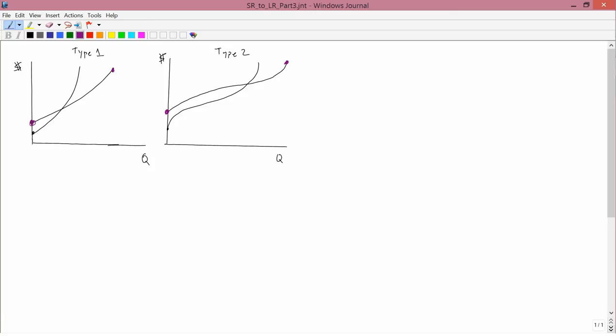We've seen that short run total cost curves can cross, and I explained that in general we think that the most intuitive situation is that they do cross. So I'm going to assume crossing.